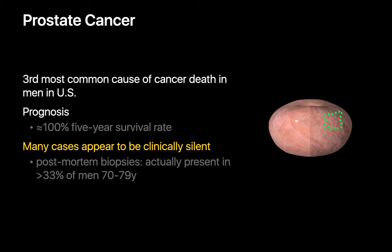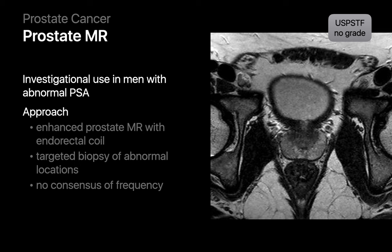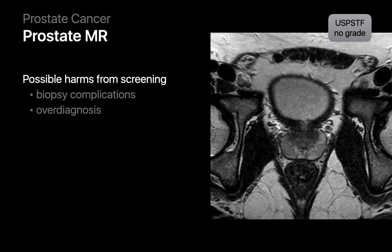Prostate cancer is the third most common cause of cancer death in men, though five-year prostate cancer survival rates currently approach 100%. Many prostate cancers may in fact be clinically silent, as post-mortem biopsy studies have revealed the presence of prostate cancer in over a third of all men 70 to 79 years of age. Some folks have proposed the use of contrast-enhanced prostate MRI and targeted biopsy of abnormal-appearing prostate regions to screen men with abnormal PSAs. However, both the risks from biopsy complications and substantial overdiagnosis are significant. The USPSTF currently makes no comment regarding prostate cancer screening with MRI.